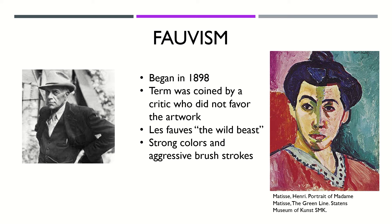Fauvist art is described as violent or strong colors and fierce or aggressive brush strokes. Sometimes these colors may even be applied straight from the tube of paint. The example of Fauvist art on this page is a piece by Henri Matisse titled The Green Line.